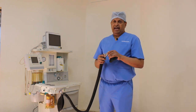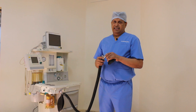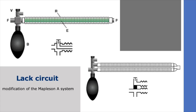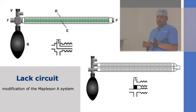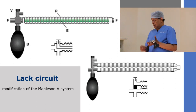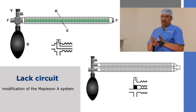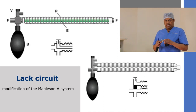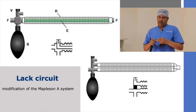To address this, Lack modified the classic Mapleson A system — this is called the Lack system. What he did was move the APL valve from the patient end to the machine end. An additional tube from the patient end connects to the APL valve, so expired gas moves through that tube during expiration and vents out through the APL valve. This can be either a coaxial or parallel arrangement.